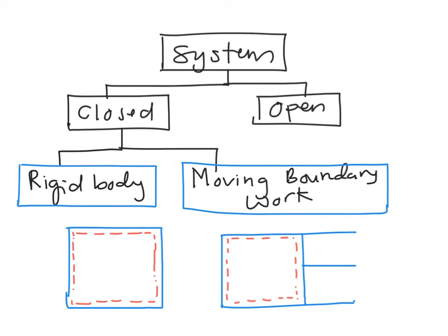In a closed system, energy can be transferred in a form of heat, work, and also mass. However, for a closed system, the energy can only be transferred in a form of heat coming in or going out, and also in a form of work.